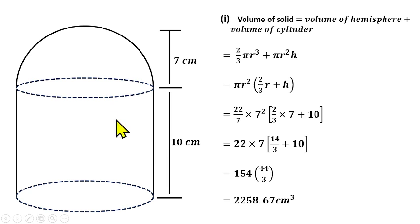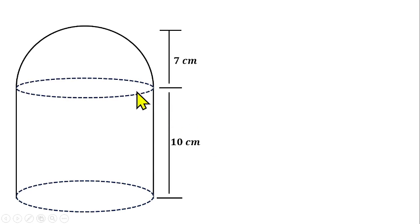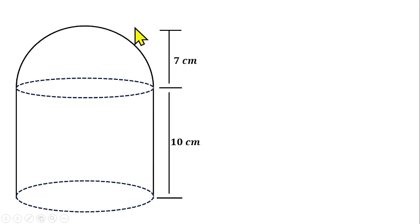Now the area where students tend to make mistakes is the total surface area of a composite shape. Let's find the total surface area. The circular surface you see where the hemisphere meets the cylinder is not part of the surface area, because the bottom of the hemisphere and the top of the cylinder will not be seen when the hemisphere sits on top of the cylinder — just like a roof covering the top of a house.